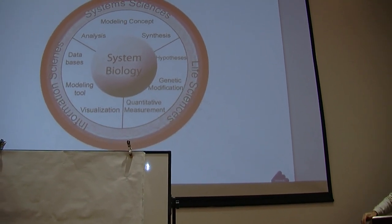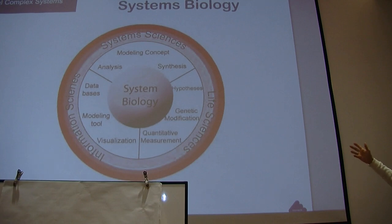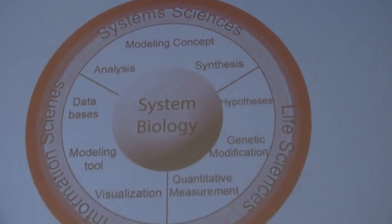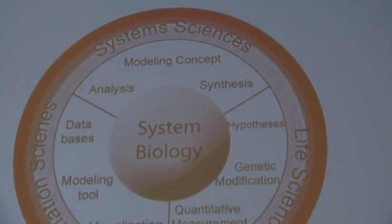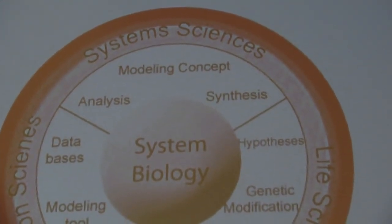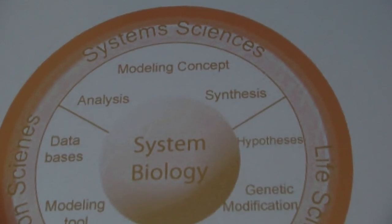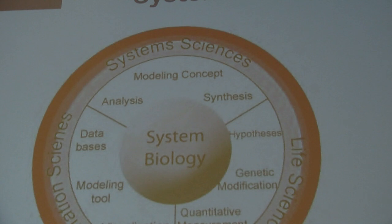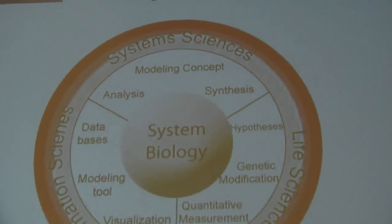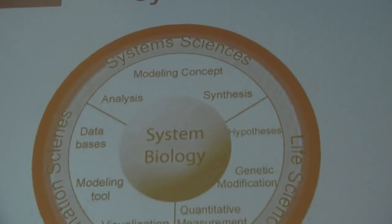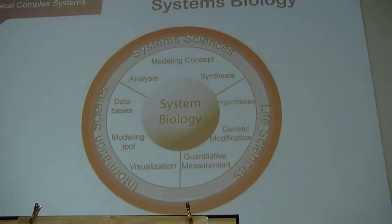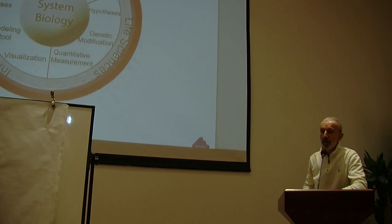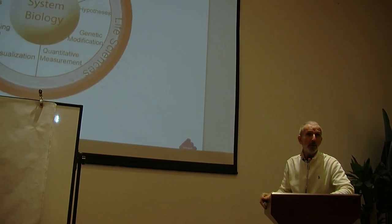And this is what we know nowadays about system biology. On top we have the system science. We have analysis, modeling concept, synthesis. Most of modern and western medicine is based on information. That means statistics. The doctor looks at you. You become a number, and they try to put you into a kind of box. And then we have the life science, which is the one that works, the more natural one.